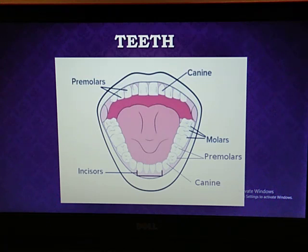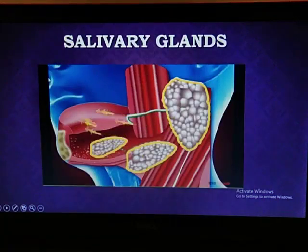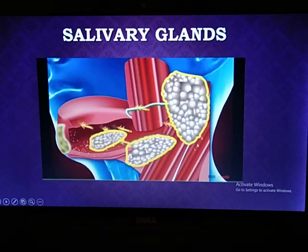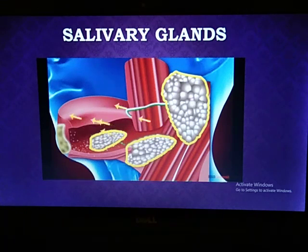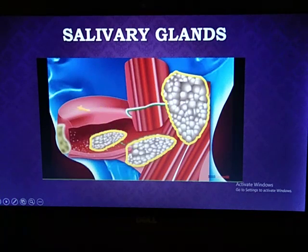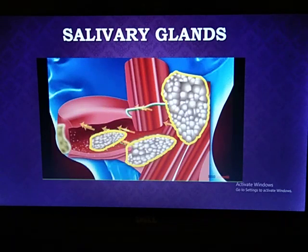The teeth help in cutting bulk food into smaller pieces by chewing, and the process of digestion starts here with the help of saliva secreted by the salivary glands. The salivary glands release a digestive juice called saliva. Saliva makes the chewed food wet and slippery, which makes swallowing easier. It also breaks down starch into sugars. The salivary glands are located in specific places in your mouth and help you chew and digest food easily.